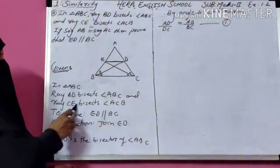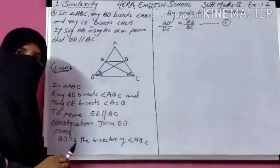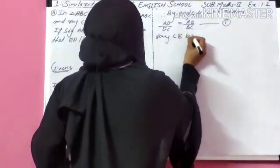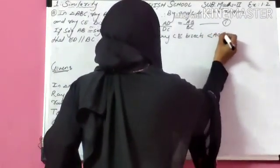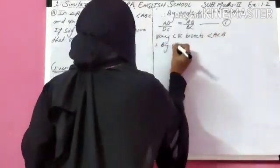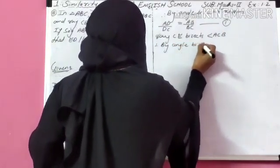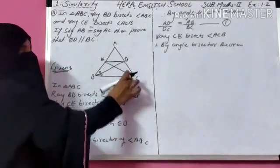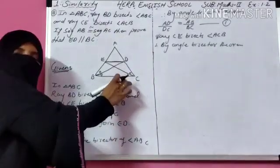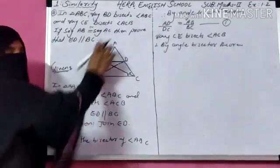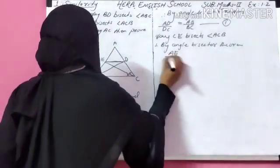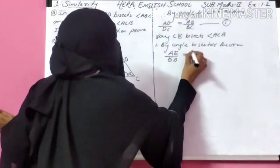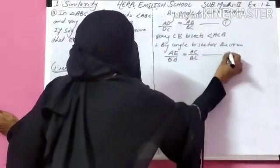Next, ray CE bisects angle ACB, so we similarly apply the angle bisector theorem. By angle bisector theorem for CE: the ratio of the side opposite to angle C equals the ratio of remaining sides. So: AE upon EB equals AC upon BC. Label this equation number 2.